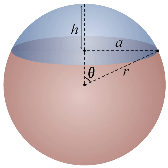See also: Circular segment — the analogous 2D object. Solid angle — contains formula for N-sphere caps. Spherical segment. Spherical sector. Spherical wedge.